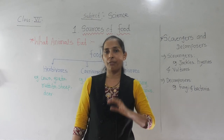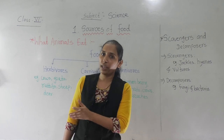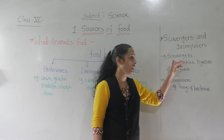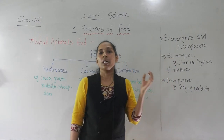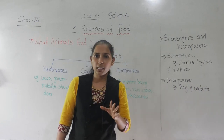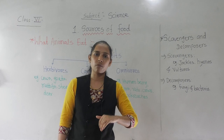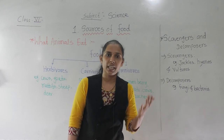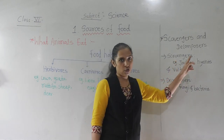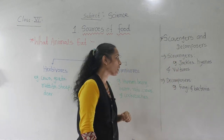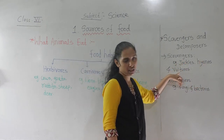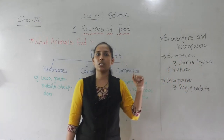Scavengers are animals that eat the remaining flesh or dead and decaying flesh of organisms. In simple terms, they eat the flesh of animals that they did not kill themselves — whatever leftover flesh exists, they eat it. Examples of scavengers include jackals, hyenas, and vultures.